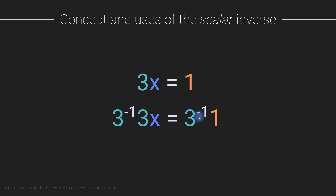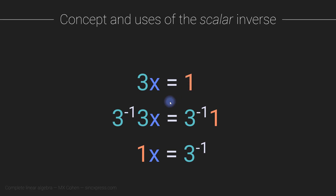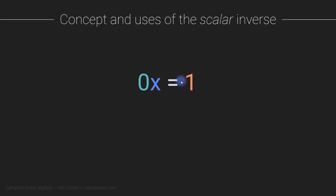The 3 inverse cancels with the 3, and we're left with X equals the inverse of 3 — that solves the equation. 3 times the inverse of 3 equals 1. As I mentioned in a previous video at the end of the section on matrix multiplications, there is no such thing as matrix division per se the way there is scalar division, but the concept is similar.